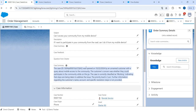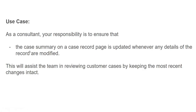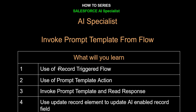There are multiple ways to do it — I can use Flow or I can use Apex triggers to trigger this particular prompt template. I'll go with a low-code approach, so we will be using Flow to invoke the prompt template. The case summary field should be updated whenever any details of the record are modified. We will learn how to use Flow and, most importantly, how to call the prompt template from the Flow, read the response, and update it back in the record field.